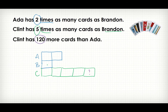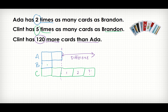Clint has 120 more cards than Ada. What is the difference between Clint and Ada? Clint has five units, Ada has two units. The difference is three units. The difference is 120, so three units equals 120, and therefore one unit equals 120 divided by 3, which is 40.